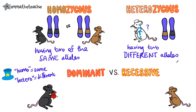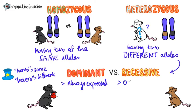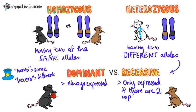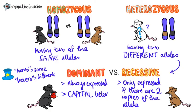But what fur color, or phenotype, will the mice have? We need to know more about the alleles. There are two types of alleles. Dominant alleles are always expressed or shown, whereas recessive alleles are only expressed or shown if there are two copies of that allele — i.e., both alleles are the same. We represent dominant alleles with capital letters, whereas recessive alleles are shown by lowercase letters.